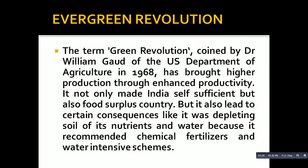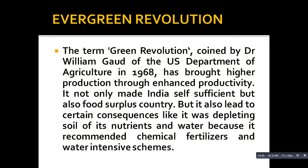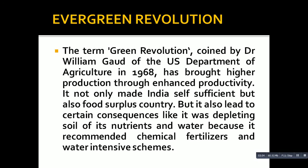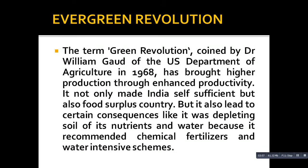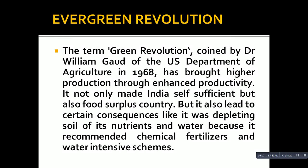However, there were many negatives to the Green Revolution. Regional disparity increased, with affluent states like Punjab and Haryana being the primary focus. Capitalist farming took root. There were also many ecological problems: soil degradation, water pollution, and groundwater depletion. In Punjab and Haryana, groundwater was used excessively, causing salinity to increase - as groundwater is over-extracted, salt rises up and the soil becomes saline.